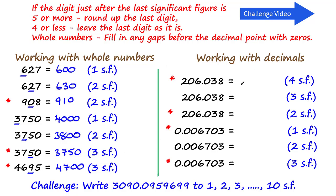Now moving to decimals. For 206.038 rounded to 4 significant figures: the 2 is the first, the 0 is the second, the 6 is the third, and the next 0 is the fourth significant figure — we're rounding to the nearest tenth. The next digit is a 3, which is 4 or less, so we don't add 1 to the 0. The answer is 206.0. For three significant figures, the third significant figure is the 6. The digit to the right is a 0 — 4 or less — so we don't round up, giving 206. Note the slight difference between these two answers.